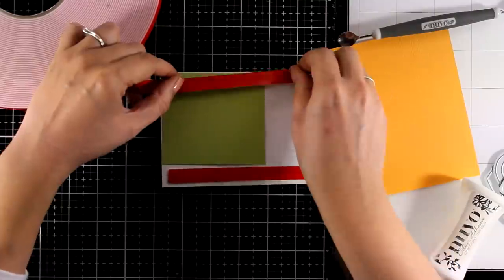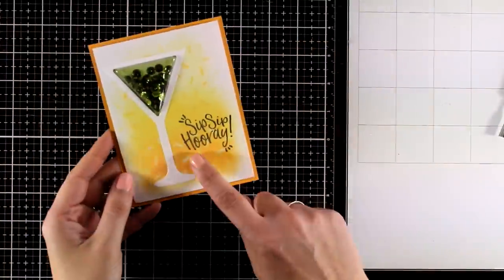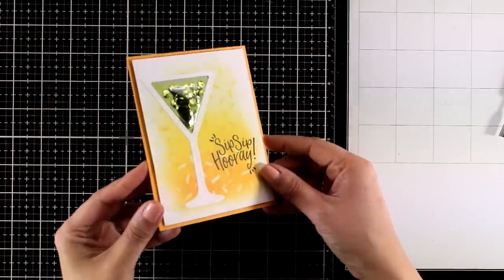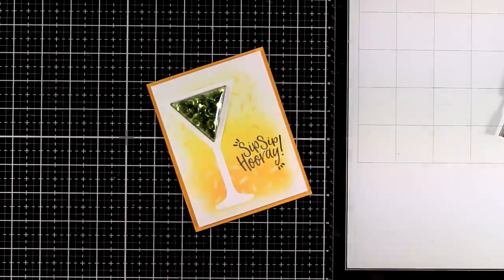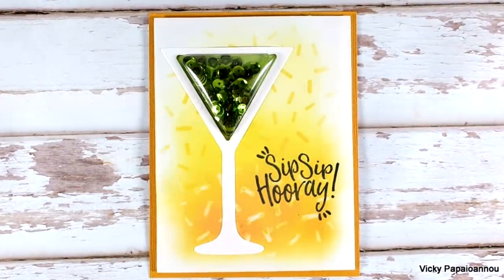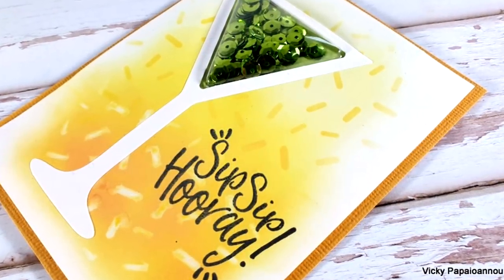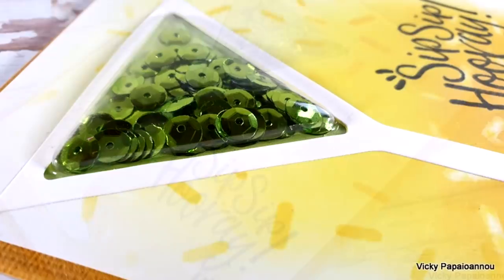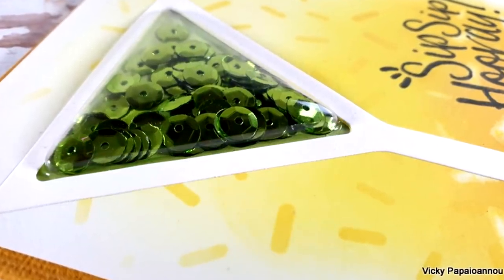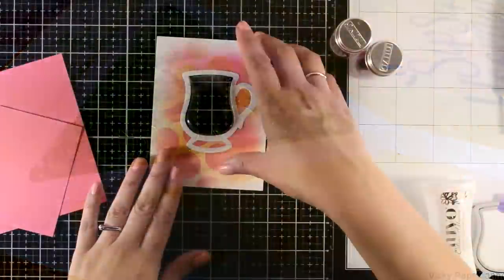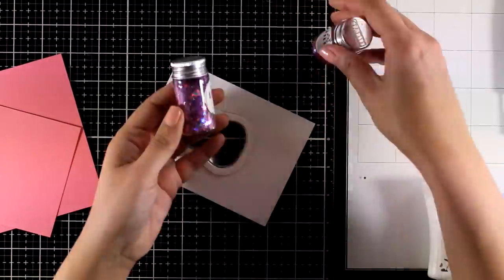The foam tape that I'm using if you are wondering is by Arteza and I do have a coupon code for that down below in the description area. And here is a close-up look on this card as well. Now you can also decorate this even more if you like on top of the glass and I will make an example on the last card on how you can add extra bits and pieces on one of those shaker cards.